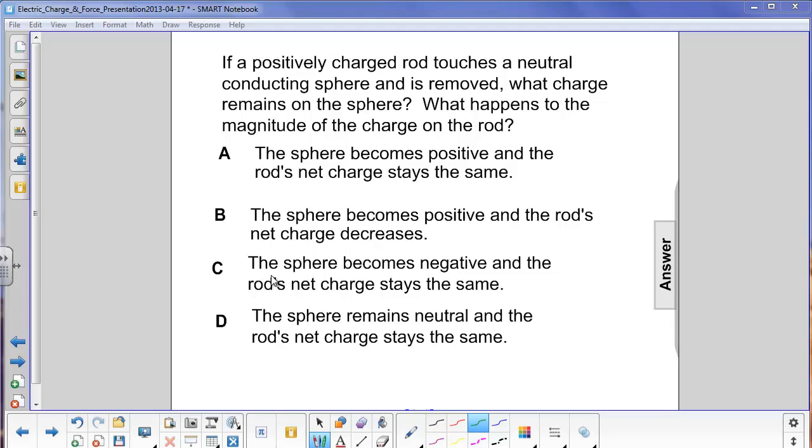If a positively charged rod touches a neutral conducting sphere, you start here with zero charge, and this rod here is going to touch it and come in contact with it.